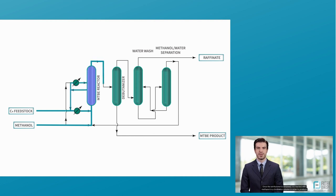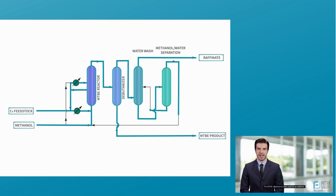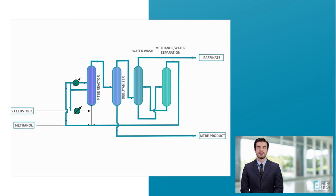Once the tert-butanol is obtained, it is reacted with methanol in a distillation column in order to produce MTBE. The resulting product is then cooled and filtered to remove any remaining catalyst particles. The MTBE obtained is then used as an additive.